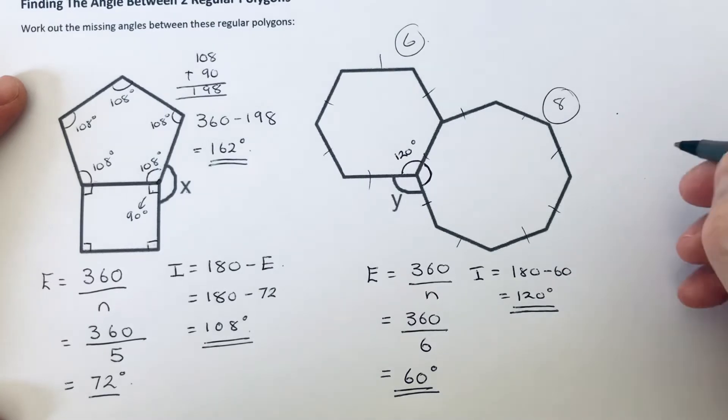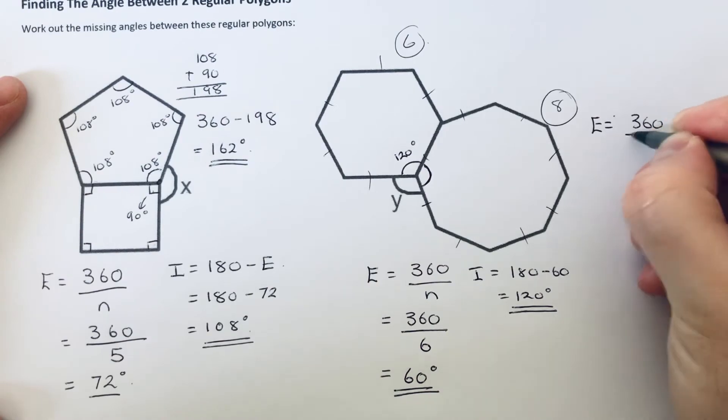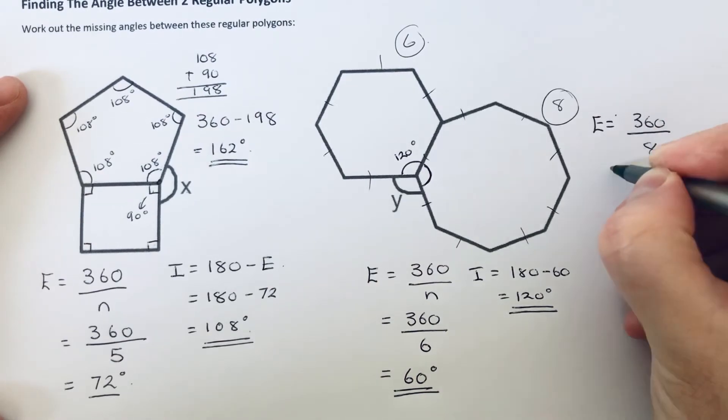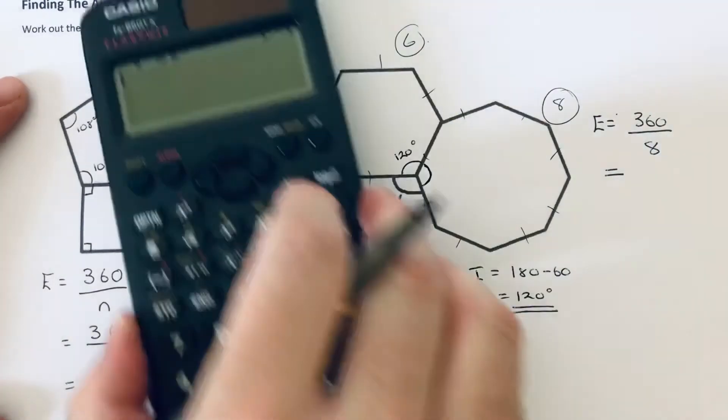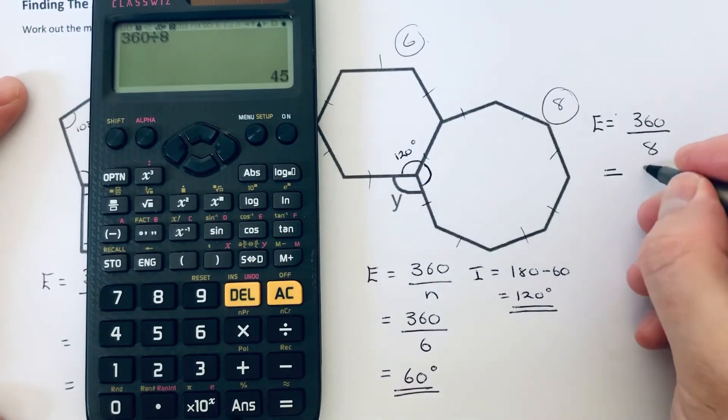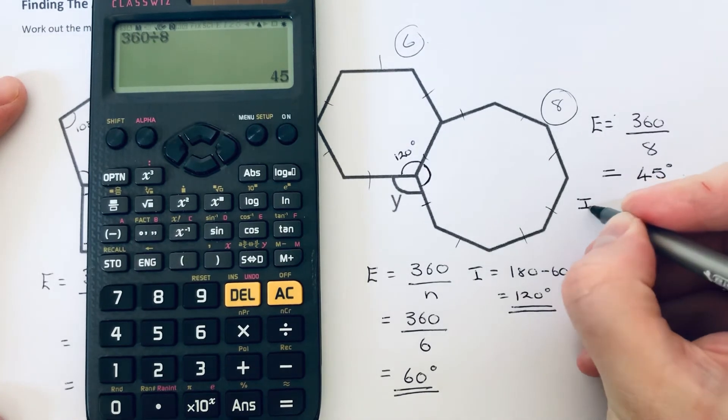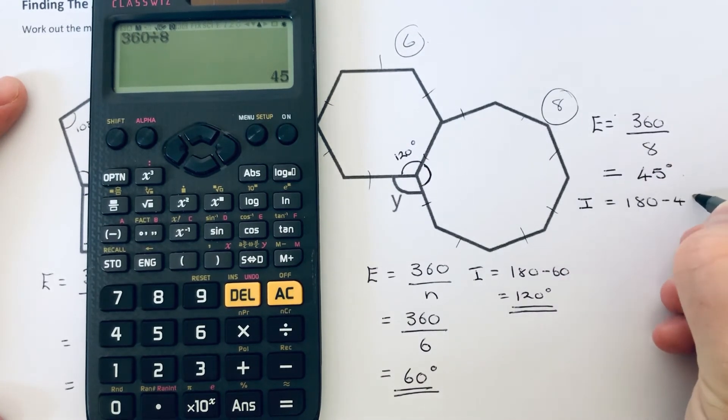So we can do this in a similar sort of way. So to get the exterior angle we do 360 divided by 8. So 360 divided by 8 is 45 degrees.